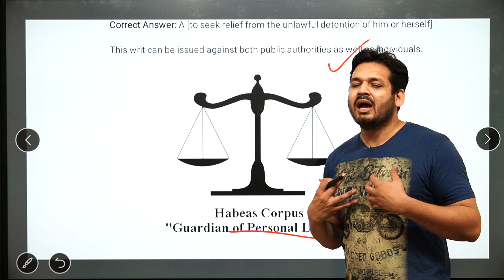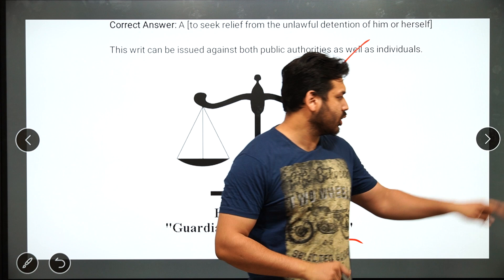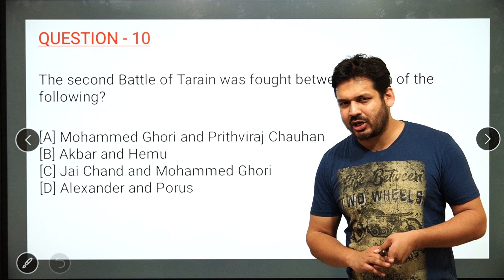The answer for Habeas Corpus is A — it is used to seek relief for unlawful detention of a person. If someone is detained illegally, you can file a Habeas Corpus writ. It can be issued against both private and public authority. It is considered the guardian of personal liberty.